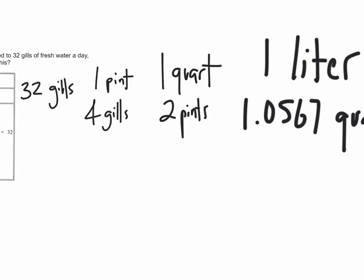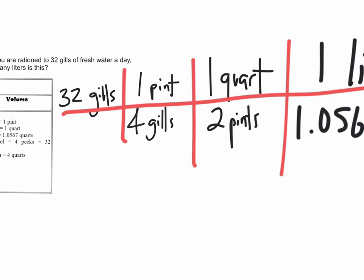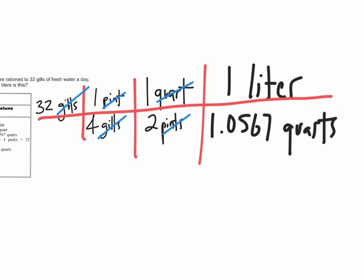And so now what we need to do is we need to sort of create our chart. And let's do that right now. So I'm going to draw that line that's going to indicate numerators from the denominator, top from the bottom. And now let's do a little bit of canceling. I can notice that gills cancel out from top to bottom. Pints cancel out, as do the quarts. And so we're left with one unit of measurement. And that, of course, is the liters.